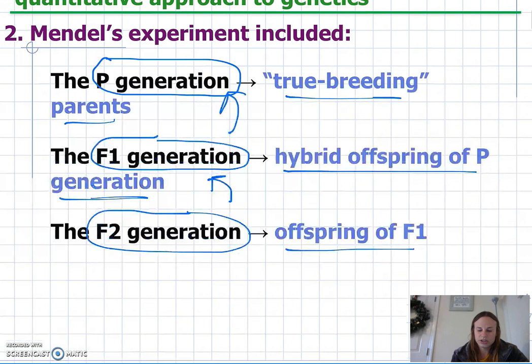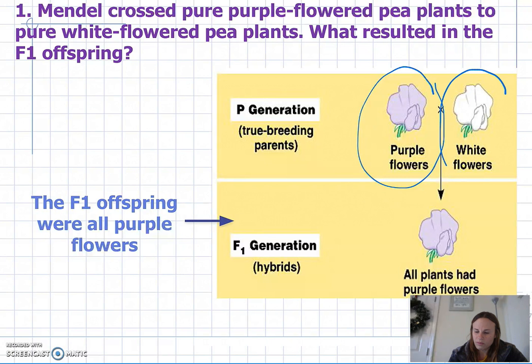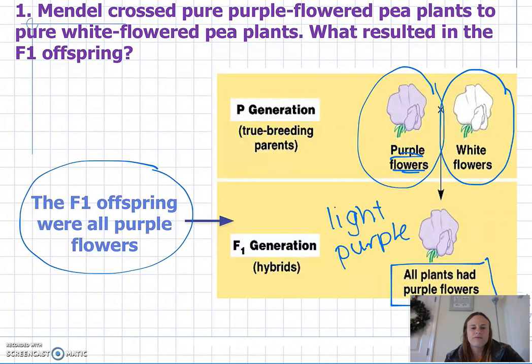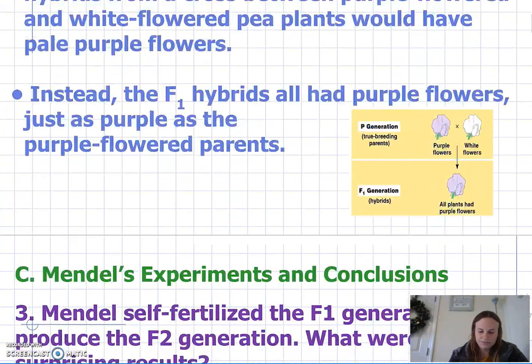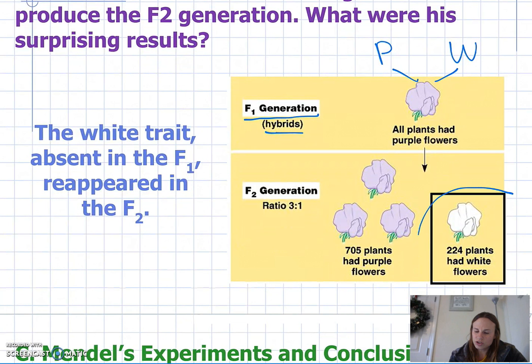What Mendel did was take purple flowers and cross them with white flowers. If the blending theory were correct, he would have gotten light purple flowers — but that is not what he got. He got purple flowers, just like what he started with, and every single one of the F1 offspring were purple flowers, not light purple. So that debunked the blending theory. Then he took those F1 generation hybrids — the ones that came from the purple and the white — and found that the trait hidden in the F1 generation, the white color, reappeared.